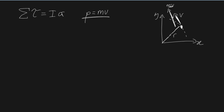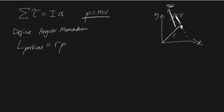Let's see if we can now introduce an even newer term. Let's define angular momentum as L of our particle. So basically we're defining the angular momentum of our particle as r times by our linear momentum. We're defining it this way.